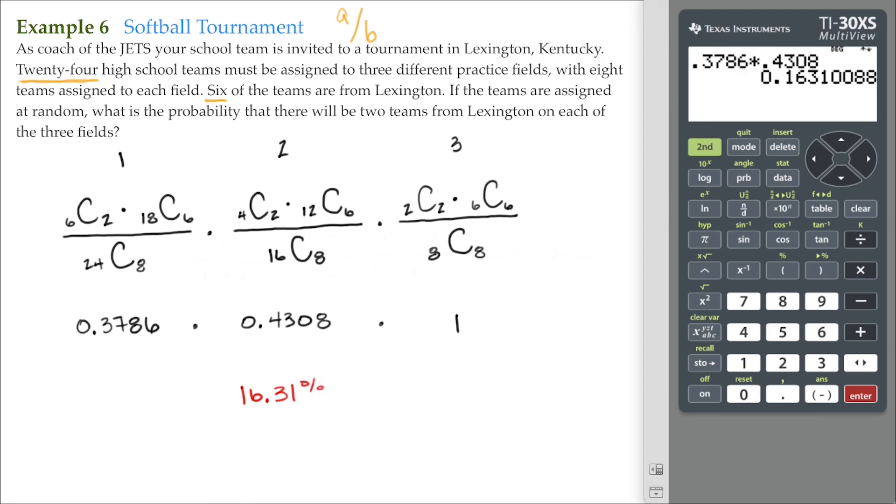So if the teams are assigned at random, what is the probability that there will be two teams from Lexington on each of the three fields? 16.31 percent.